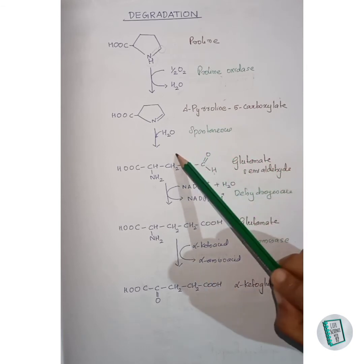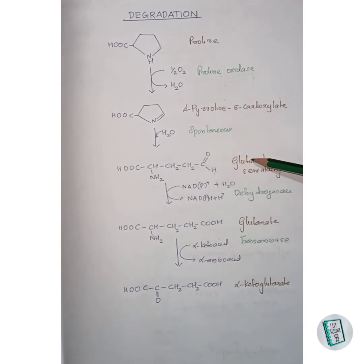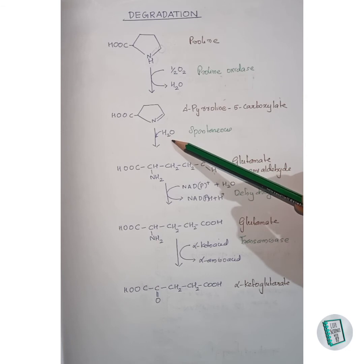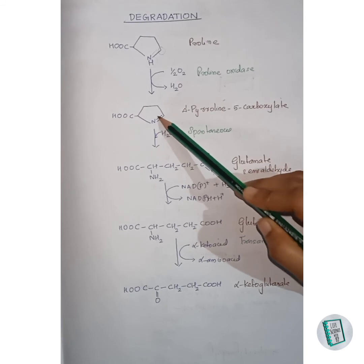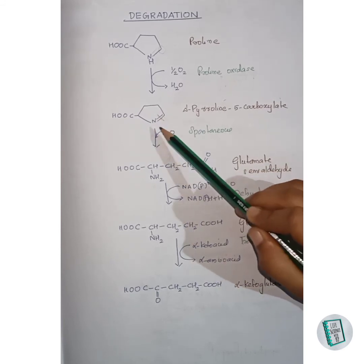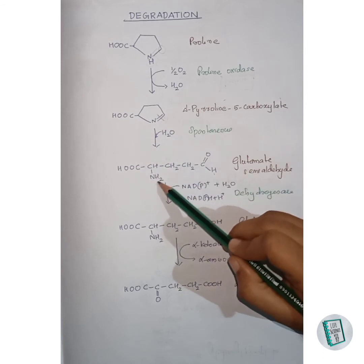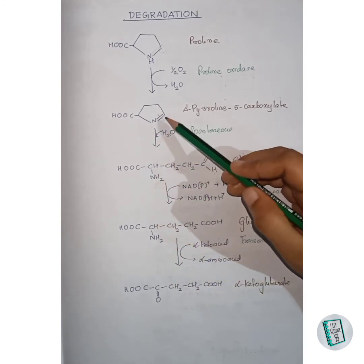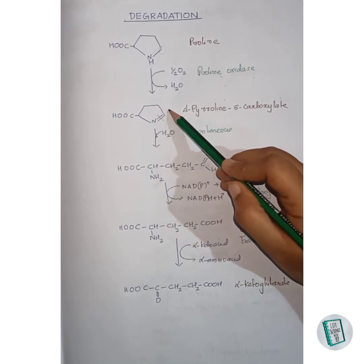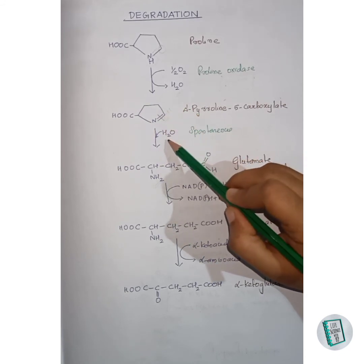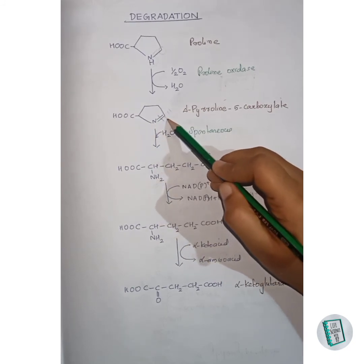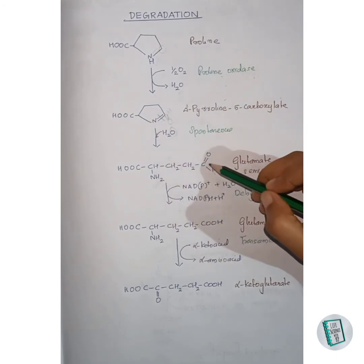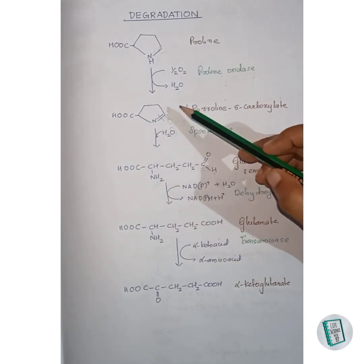This compound then undergoes spontaneous hydration to form glutamate semi-aldehyde. Upon addition of water, cleavage occurs between the nitrogen and the carbon. The two hydrogens of the water molecule attach to the nitrogen, forming NH₂. The oxygen of the water molecule attaches to the adjacent carbon, forming a double bond, yielding the aldehyde group. This is the formation of glutamate semi-aldehyde.